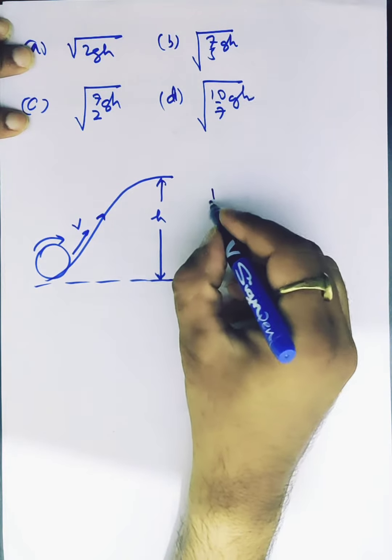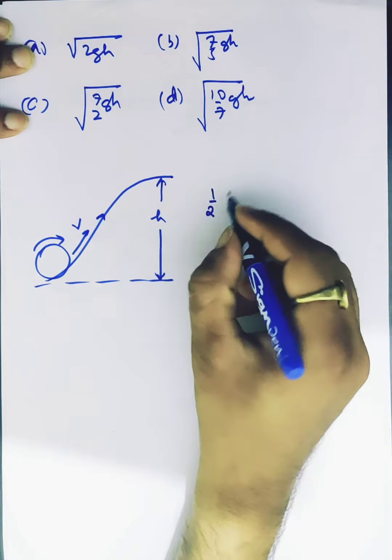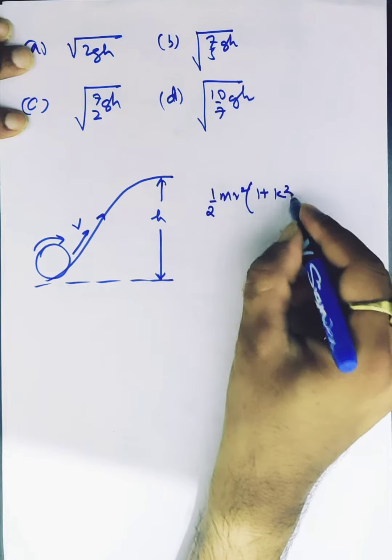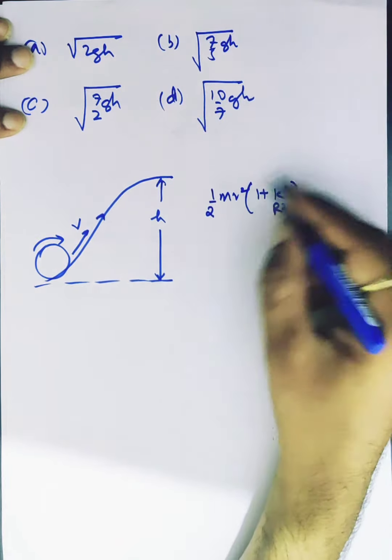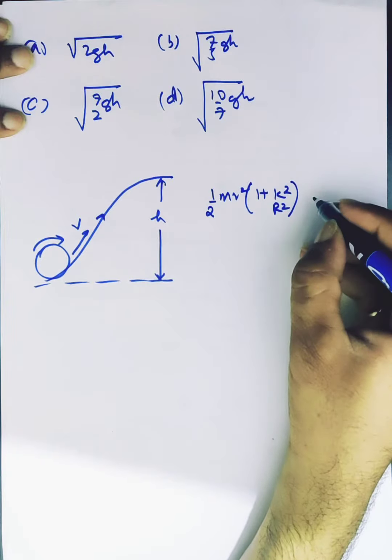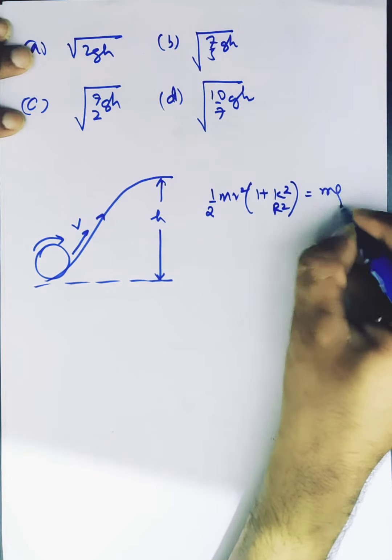Let's write down the total kinetic energy which is 1/2 mv²(1 + k²/r²). This is the total kinetic energy for a body in rolling motion, equal to mgh.